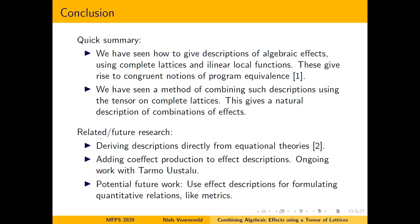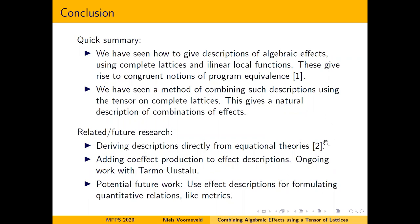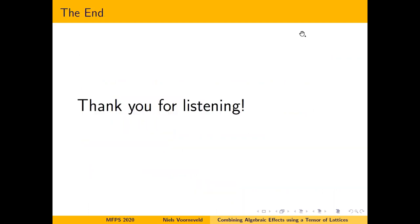In summary: we have seen how to give descriptions of algebraic effects using complete lattices and i-linear local functions, which give rise to congruent notions of program equivalence as shown in my previous MFPS paper. The main contribution here is a method of combining such descriptions using the tensor on complete lattices, giving natural descriptions of combinations of effects. Future research includes deriving descriptions directly from equational theories, adding co-effect productions to affect descriptions to describe both co-effects and effects, and using these descriptions to define quantitative relations such as metrics.